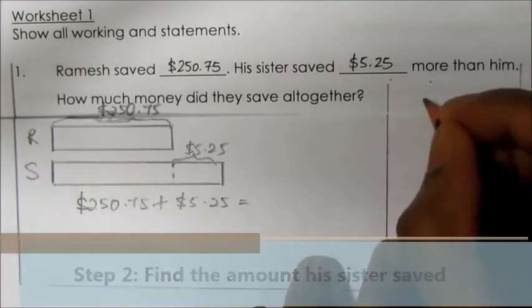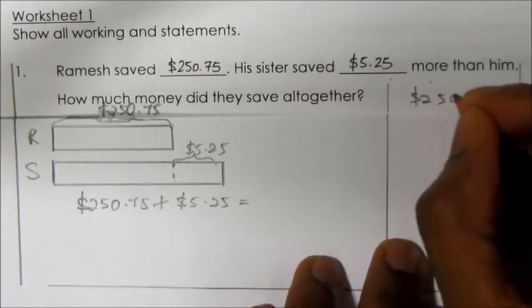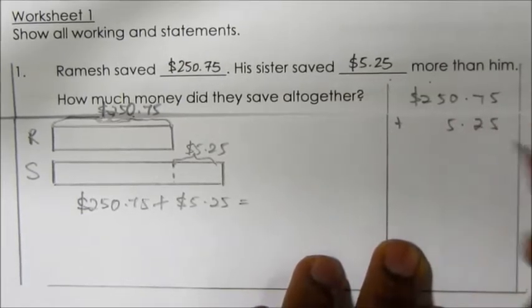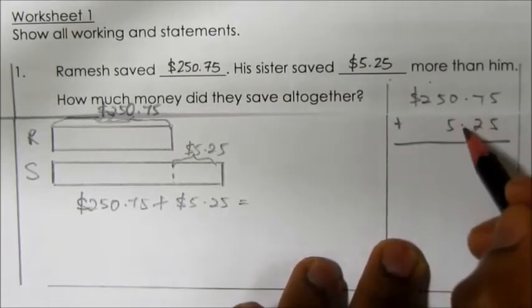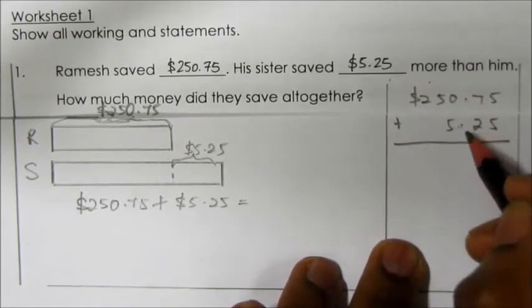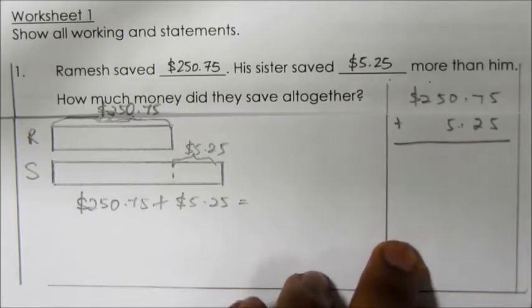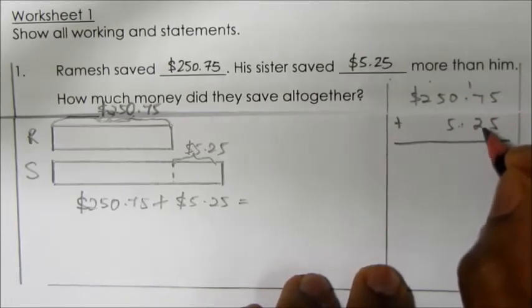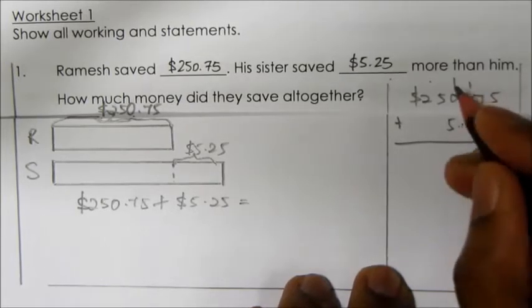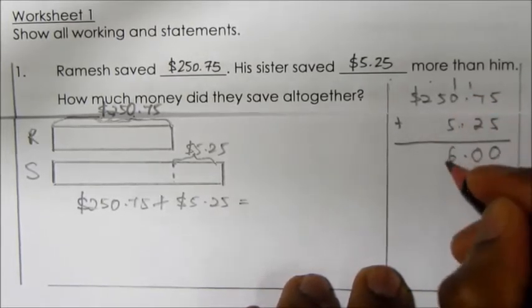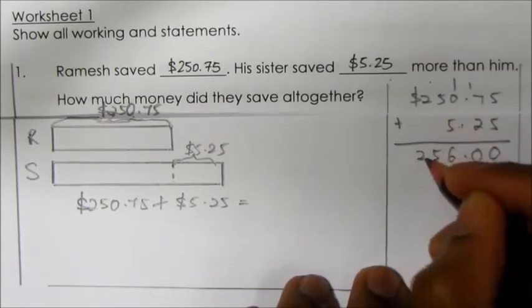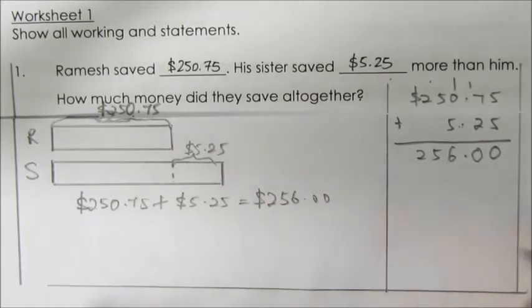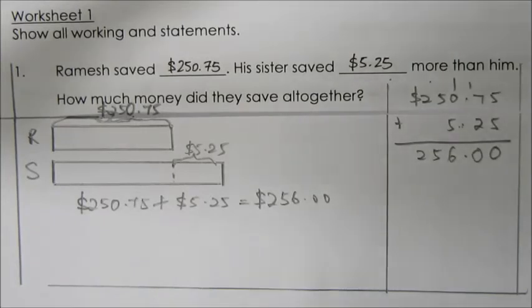So let's do the working: $250.75 plus $5.25. Remember, since this working involves a decimal point, make sure both the decimal points are aligned. So 5 plus 5 is 10. 7 plus 2 is 9, plus 1 is 10. 0 plus 5 is 5, plus 1 is 6. 5 and 2. Therefore, the amount of money his sister saved is $256.75. This is not the final answer because the question asked us to find out the total amount of money Ramesh and his sister saved.